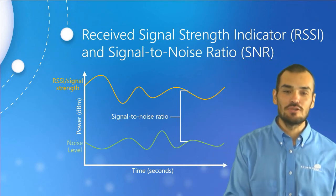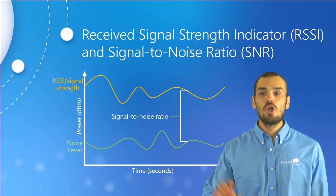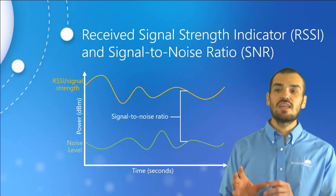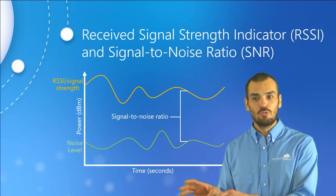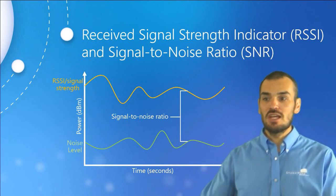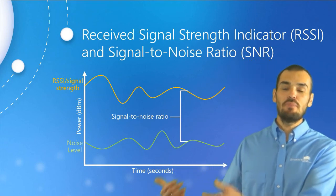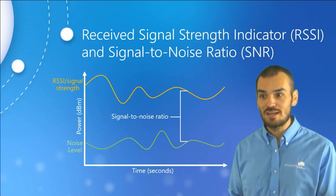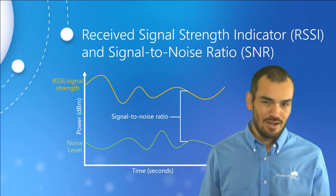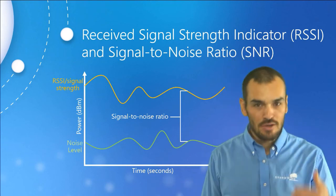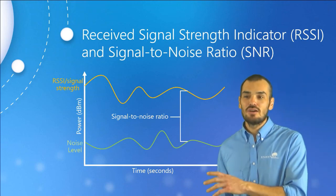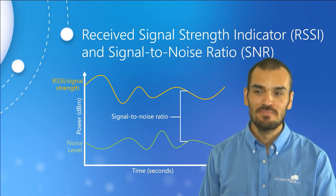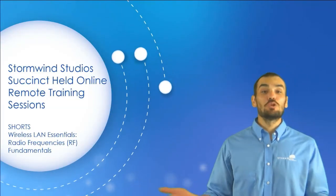The received signal strength indicator tells you how strong a received signal is relative to itself in different locations. The SNR — signal-to-noise ratio — determines how much stronger the signal is relative to the surrounding noise. It is built upon the RSSI and compares it to noise. Like dBm, it is a relative rather than exact measurement. The key characteristic: the higher the SNR, the better the signal quality. SNR is considered more universal than RSSI and is a more non-vendor-specific type of measurement.